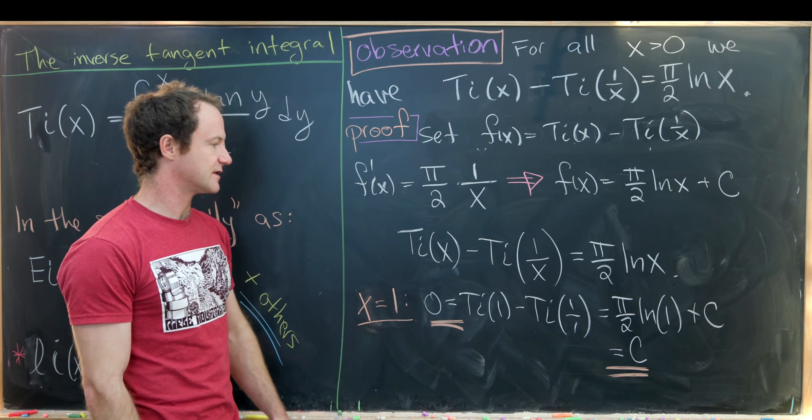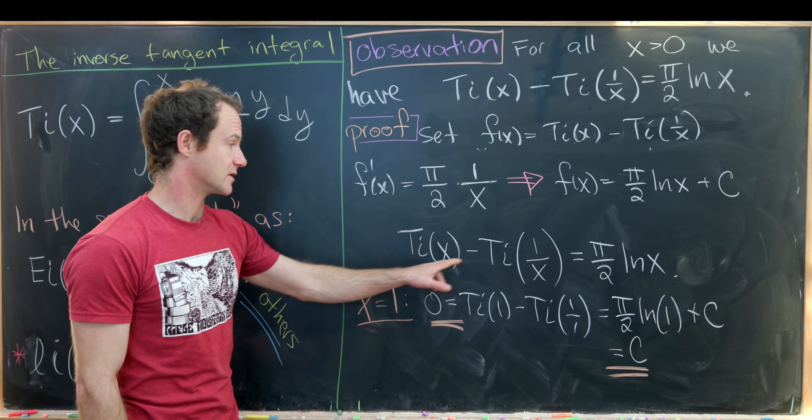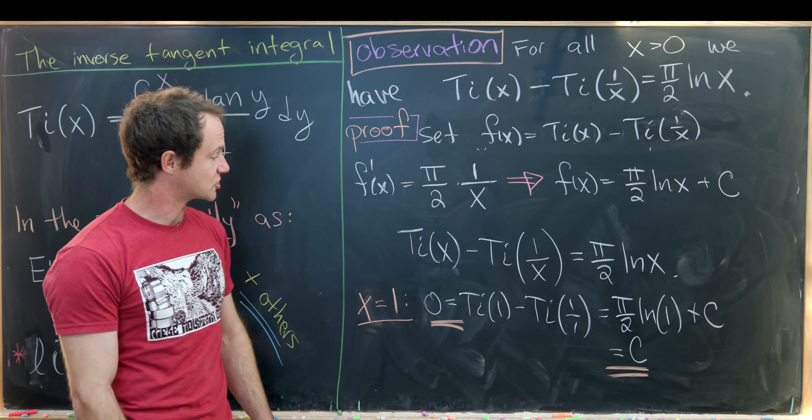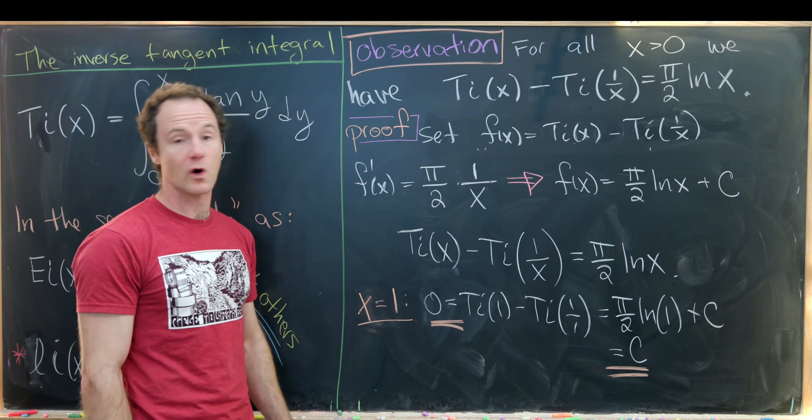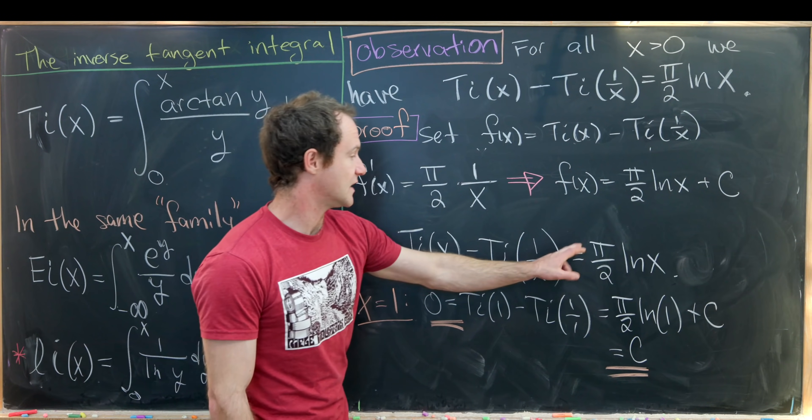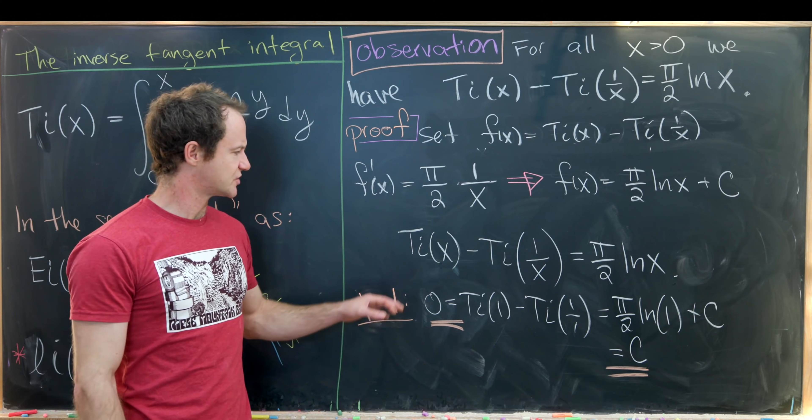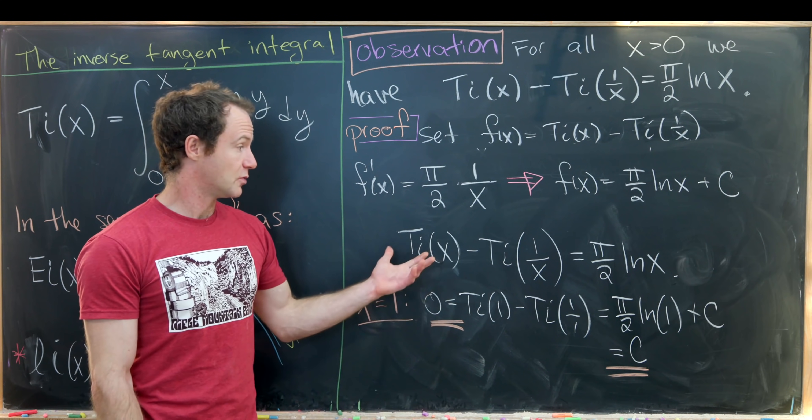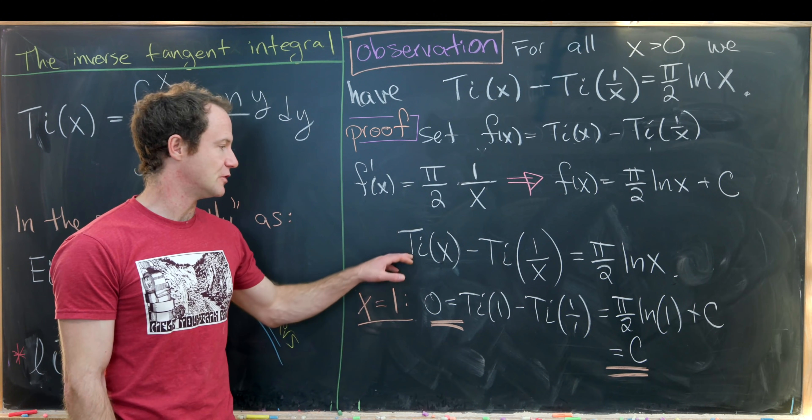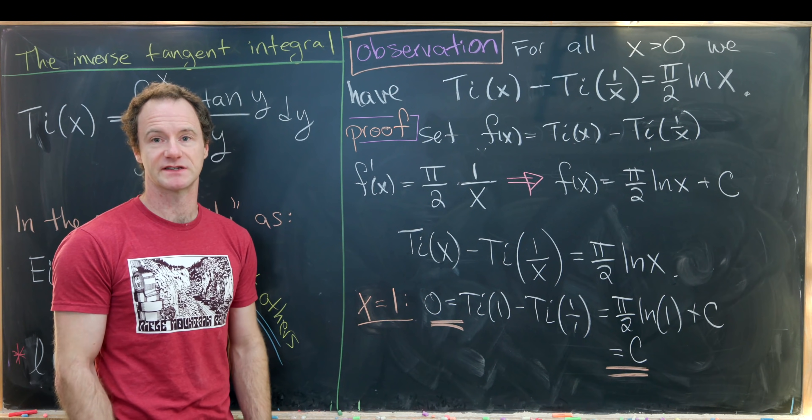And then from this we can actually build a lot of nice identities involving plugging numbers into this Ti of x function. For instance, Ti of 2 minus Ti of 1 over 2 will be equal to pi over 2 times natural log of 2. Maybe also interestingly, Ti of e minus Ti of 1 over e will be equal to pi over 2. And those are obviously just a few of this infinite family of relations that we've just found. And that's a good place to stop.